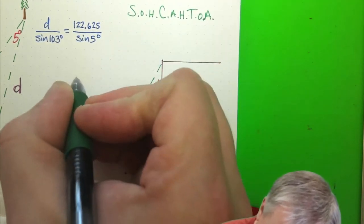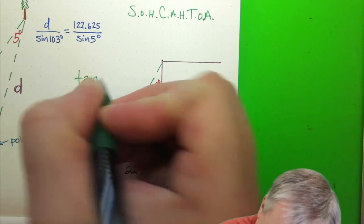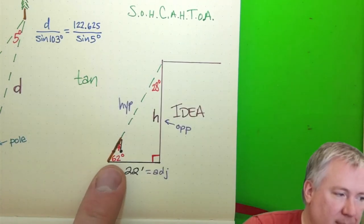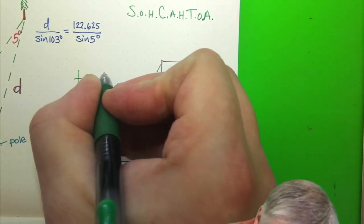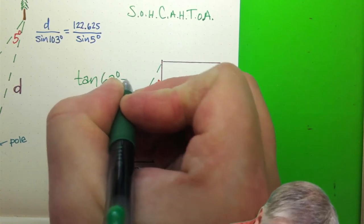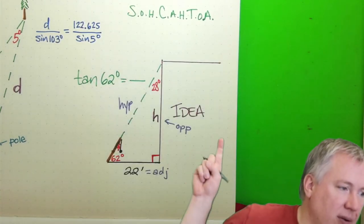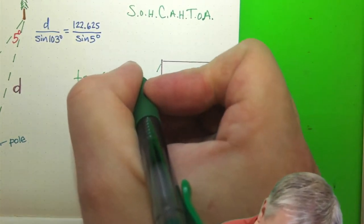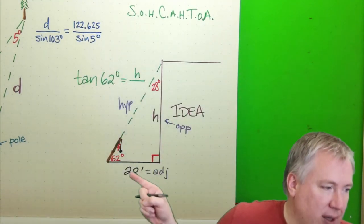So here I'm going to write the equation where tangent of my angle that I picked, which is this bottom one, 62 degrees, is equal to the opposite. The thing I don't know is H divided by the adjacent, which I do know, is 22.